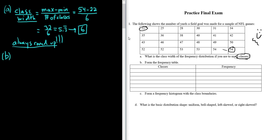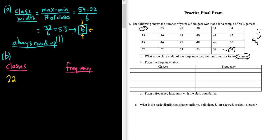Part B: form the frequency table. The first step is to write down the smallest number. Let me make the table with headings: classes and frequency. Write down the smallest number, which is 22, then add the class width and work down. So: 22, plus 6 is 28, plus 6 is 34, plus 6 is 40, plus 6 is 46, plus 6 is 52.